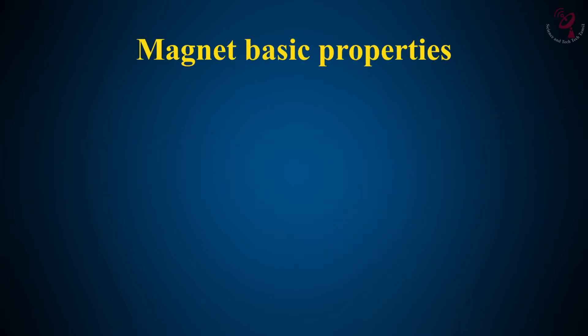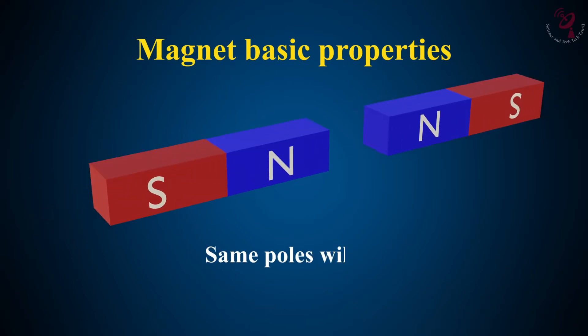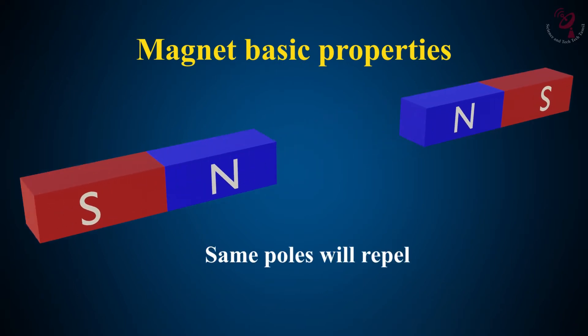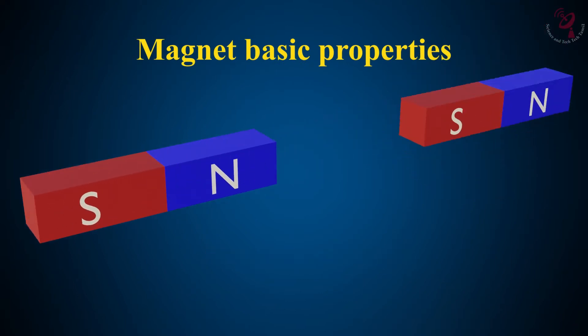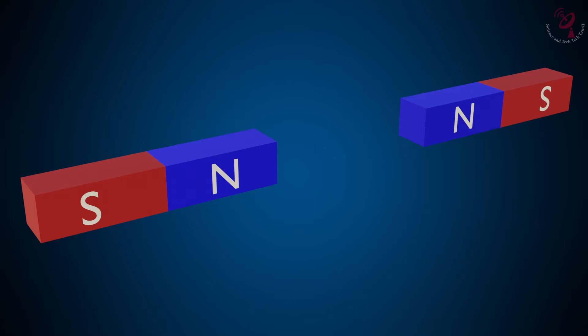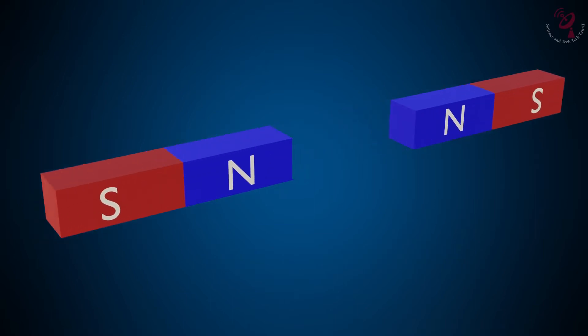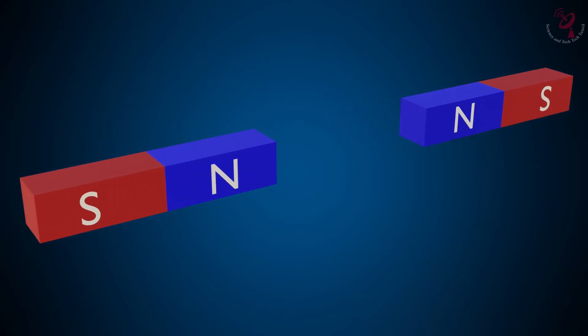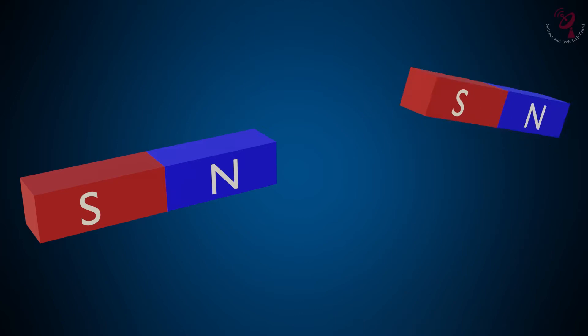The basic property of magnetism is that the same poles repel and opposite poles attract. If you place south and south, or north and north, they will repel. North and south will attract.